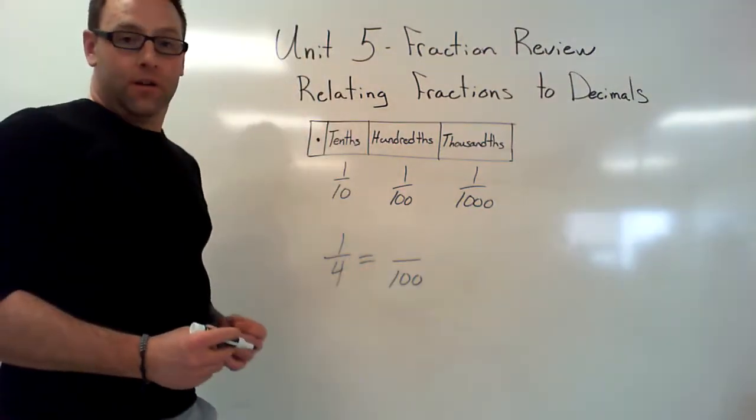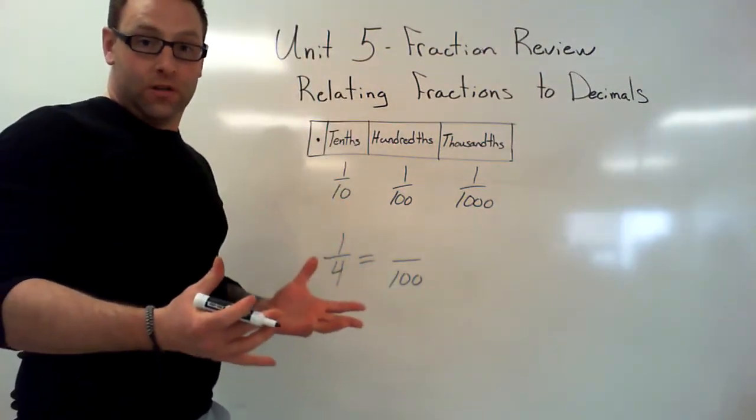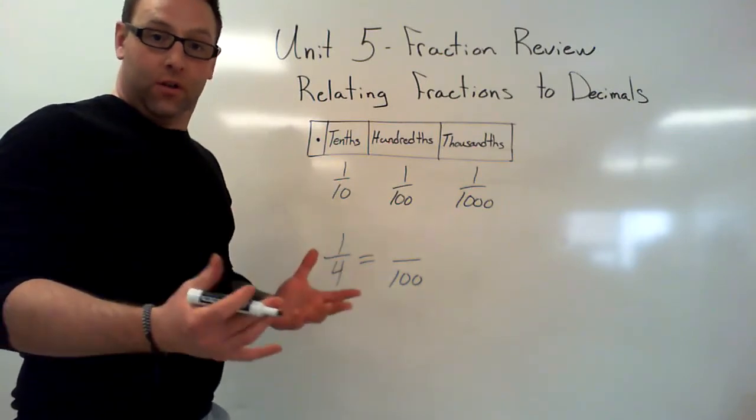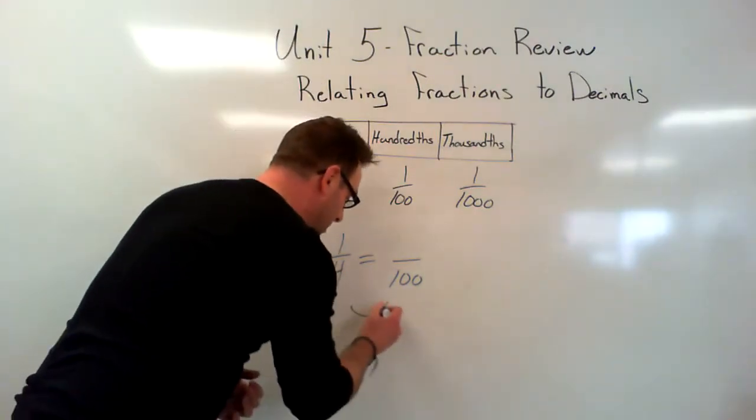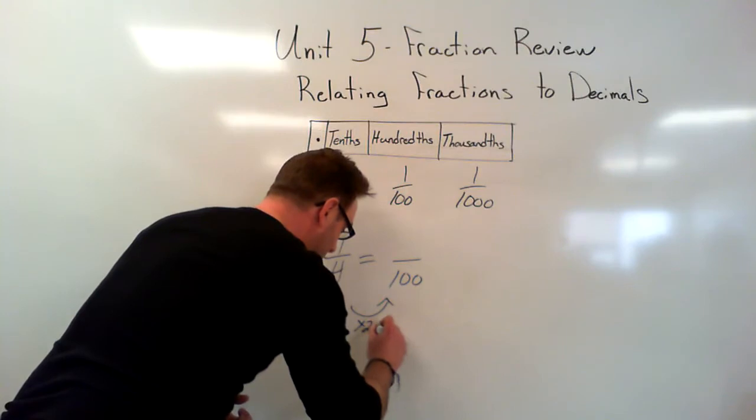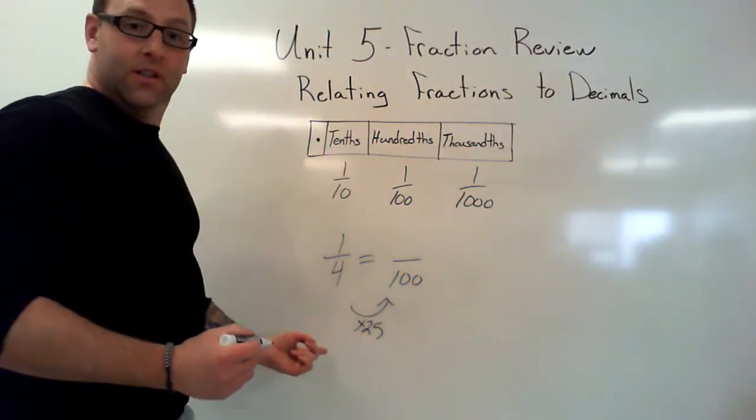1 over 4. Think about money, we talked about quarters. How can I get 4 to be 100? If I've got four quarters, I've got a dollar, which is 100 cents. So I'm going to times it by a quarter, 25 cents.